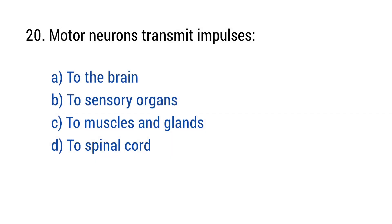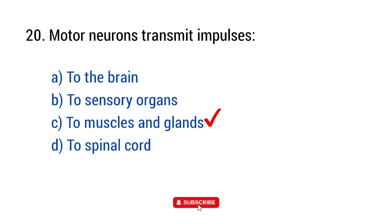Question number twenty. Motor neurons transmit impulses. The right answer is option C: To muscles and glands.